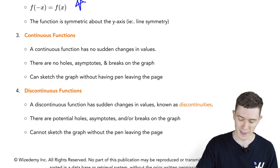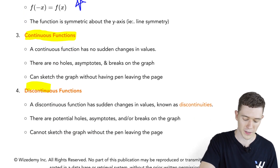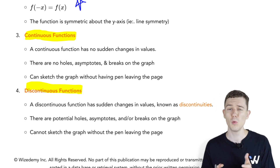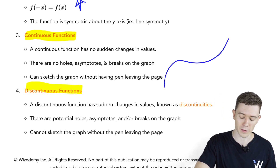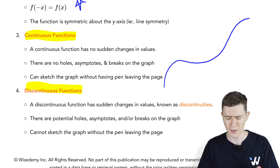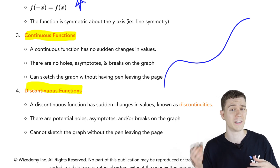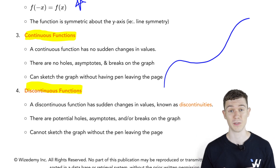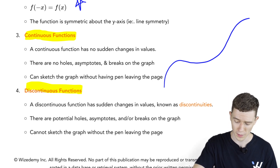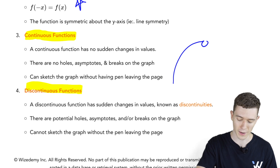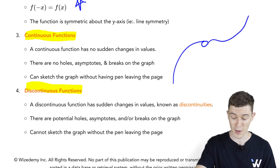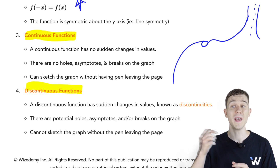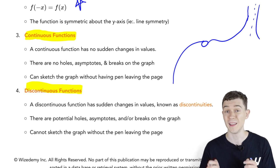A very big idea for us is continuity — continuous functions versus discontinuous functions. We'll call a function continuous if we can draw its graph from left to right without picking up our pen or pencil. There are no breaks, gaps, holes, or asymptotes. A discontinuous function has one of those things — maybe a hole, a gap or break, or it spikes up to an asymptote. Anytime we'd have to pick up our pen to continue drawing the function, that would make a discontinuity.